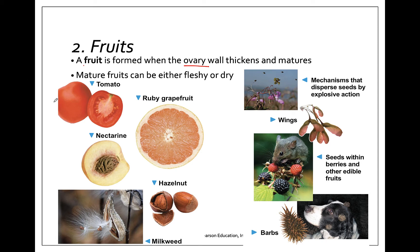On the left we've got some fleshy fruits like the tomato, grapefruit, and nectarine. Often fleshy fruits are distributed by animals — animals will eat the berries, ingest the seeds, travel, defecate, and those seeds will be left in a new location. Fruits can also be dry. Examples of dry fruits are things like beans, nuts, and grains. A lot of the time they can be distributed by wind.